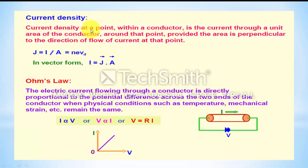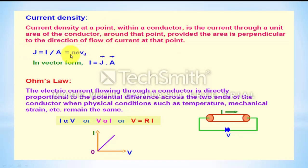Current density at a point within a conductor is the current through a unit area of conductor around that point, provided the area is perpendicular to the direction of current flow. Current density J equals I by A. Since I equals N·e·A·V_D, A and A cancel out, giving J equals N·e·V_D. In vector form, I equals J dot A.